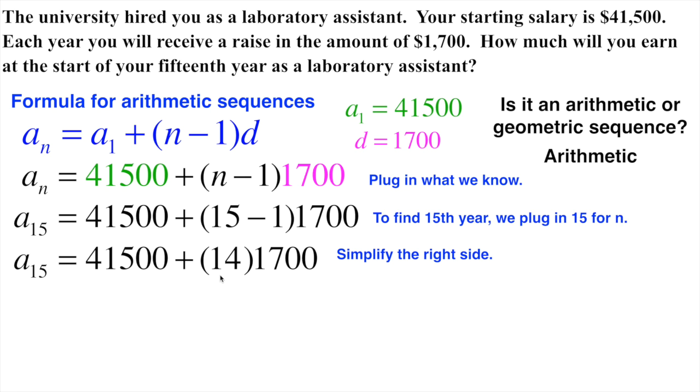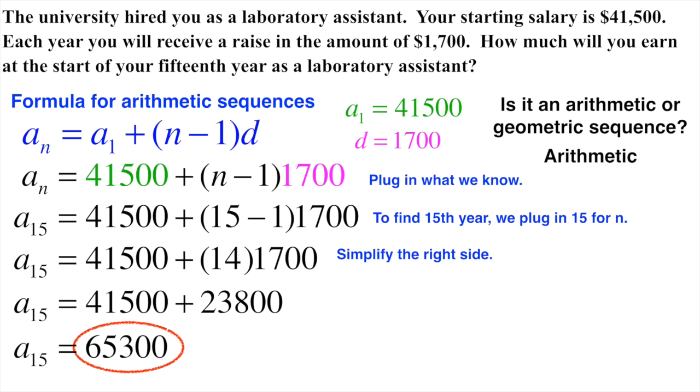So I go 15 minus 1 is 14. 14 times 1,700 is $23,800. I add that to my initial amount of $41,500, and that gives me $65,300. Now you can put a dollar sign on there, commas, all those would be fine. When you're typing it into the online system, just write it as 65,300. The computer has a hard time when you try to put labels in it. So just leave it at $65,300.